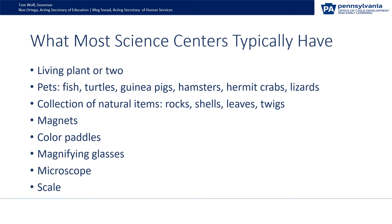What most science centers typically have: a living plant or two; pets — I've seen fish, turtles, guinea pigs, hamsters, hermit crabs, lizards; a collection of natural items — usually rocks, shells, leaves, sometimes twigs; magnets, color paddles, magnifying glasses, a microscope, and a scale.